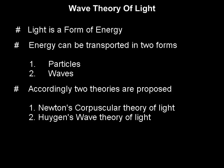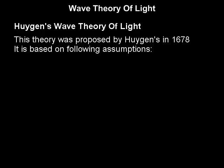The second theory was proposed by Huygens, which is known as Huygens wave theory. As per this theory, light is propagated in the form of waves. This theory was proposed by Huygens in 1678.